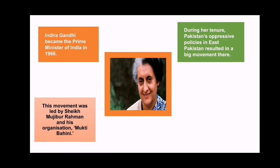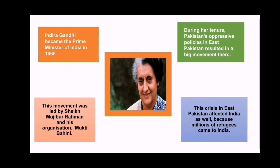This was a major challenge in front of Indira Gandhi. The movement in East Pakistan was led by Sheikh Mujibur Rahman and his organization Mukti Bahini. This crisis in East Pakistan affected India as well, because millions of refugees came to India through West Bengal and Assam, which share a border with East Pakistan. These tensions grew within our country. Now we are moving to the next era — the 1970s.